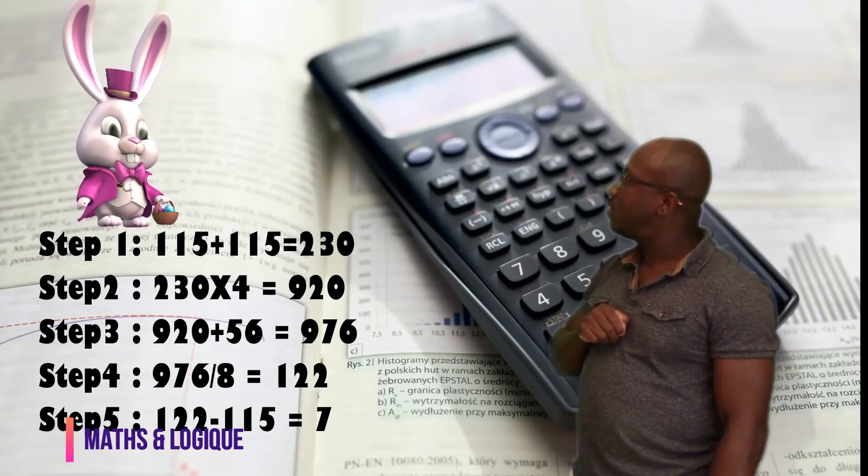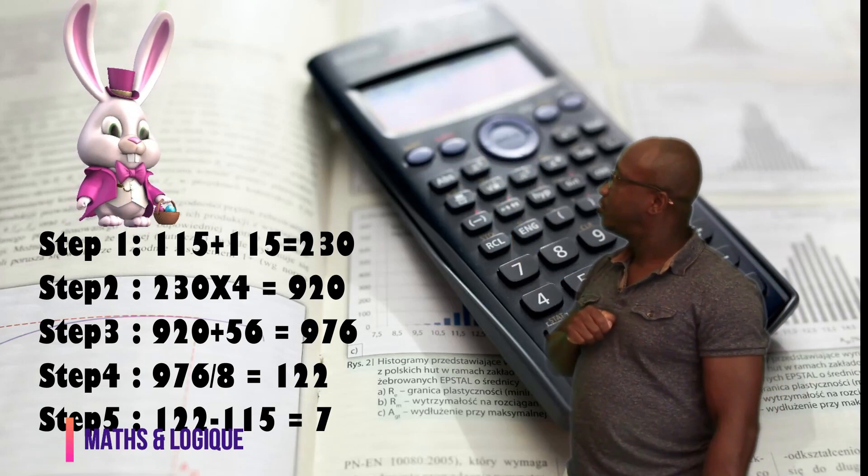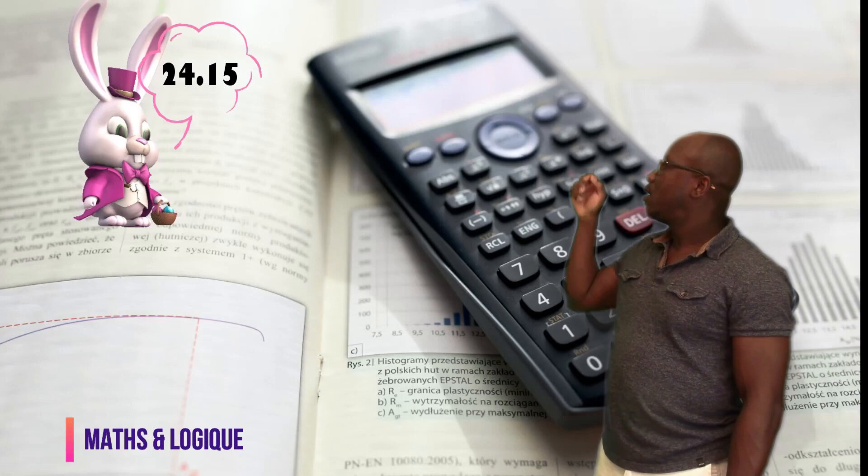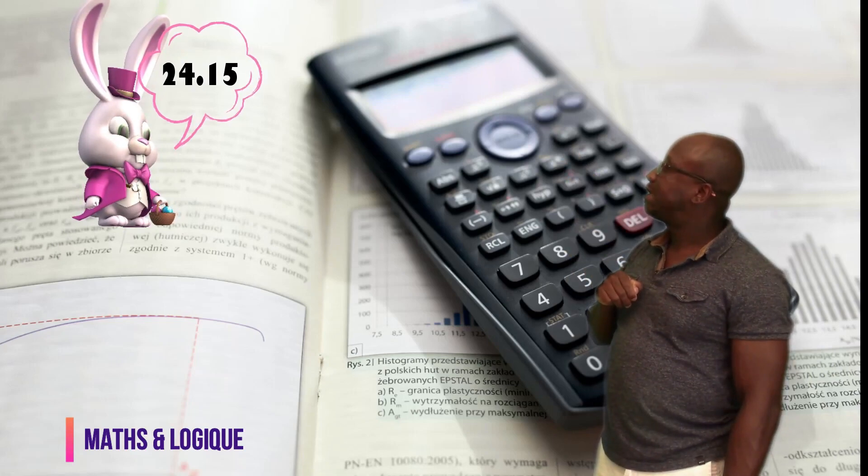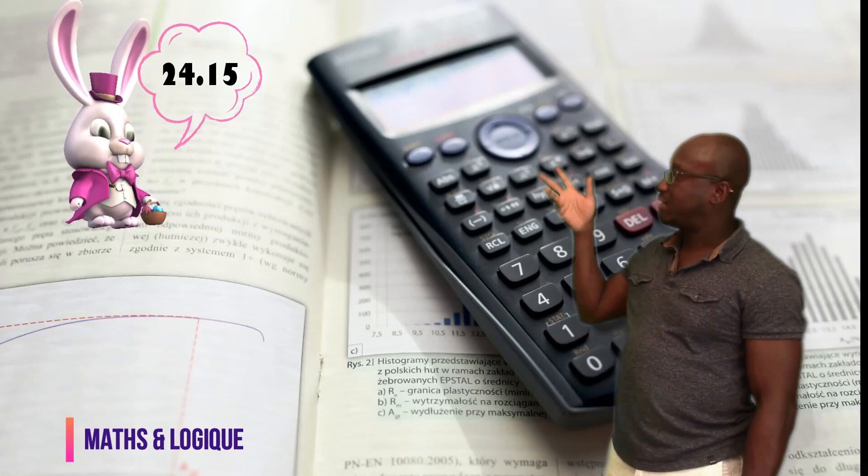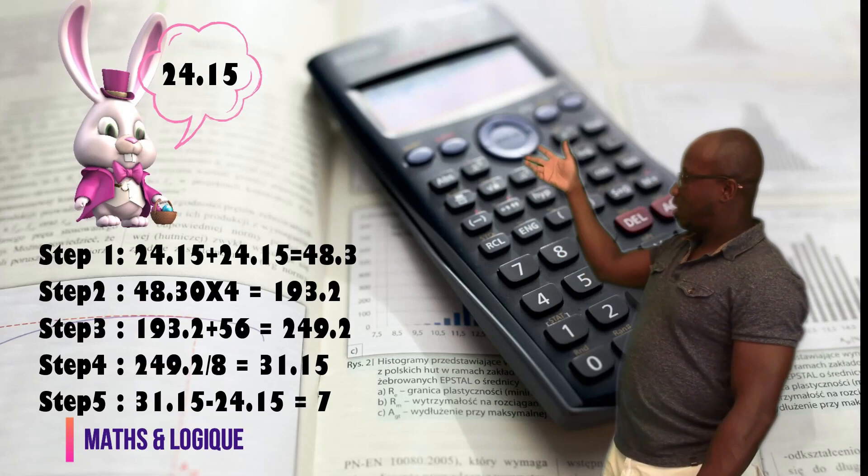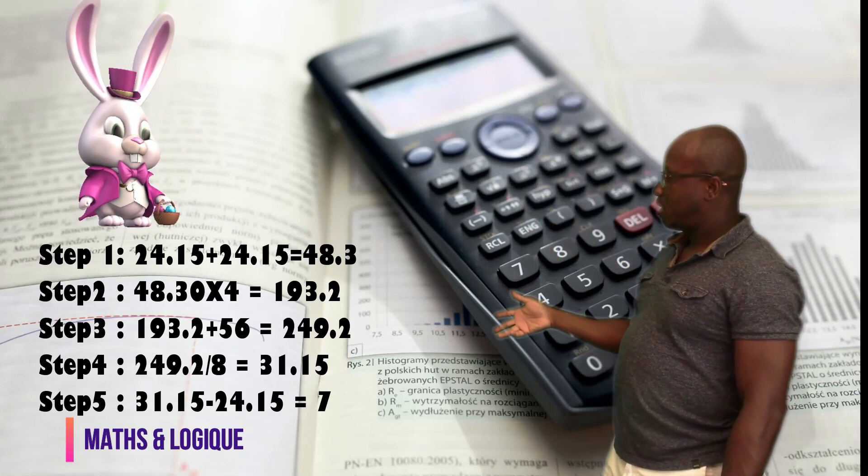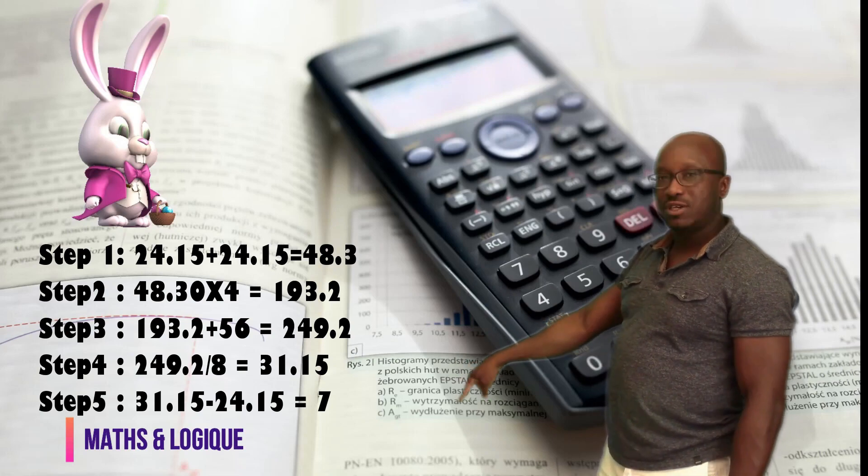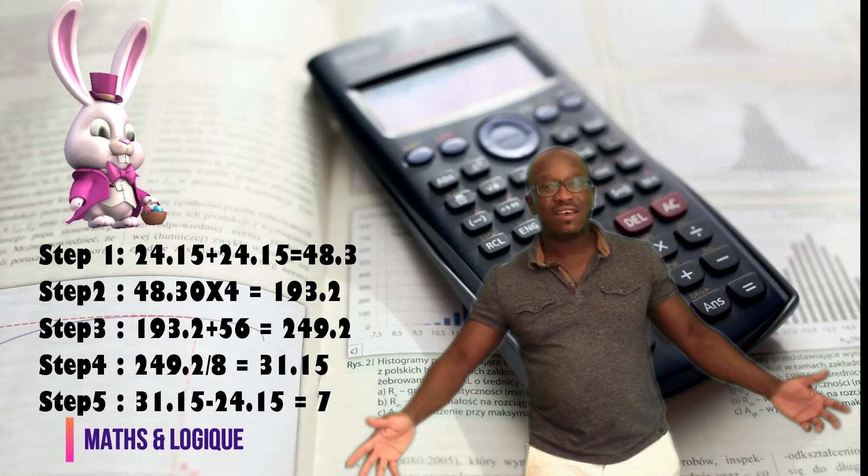And what is the last one? The decimal number? Mr. Bunny chooses 24.15 as the third number. And this is the proof that we get to the same result, which is 7.